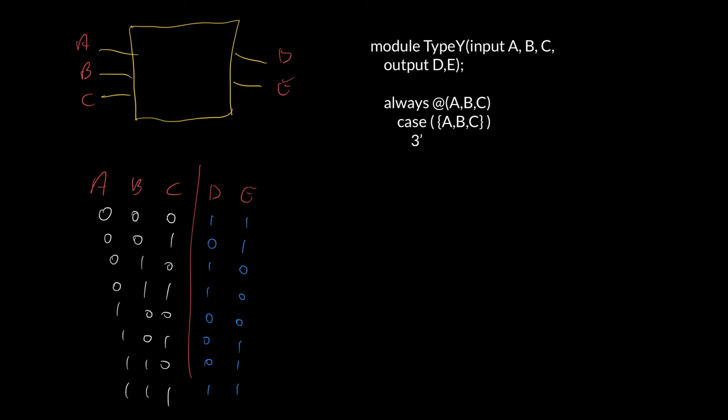So, I write 3'B. B, that denotes a three-bit binary number. B for binary, 0, 0, 0. And so, this part of the case statement will get executed if A is 0, B is 0, and C is 0. In this case, I want to set both D and E to 1, because that's what's given in my truth table.